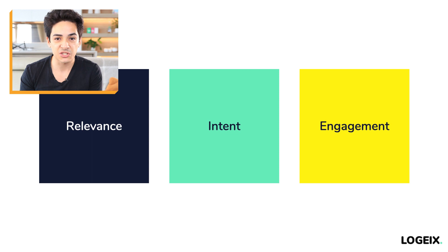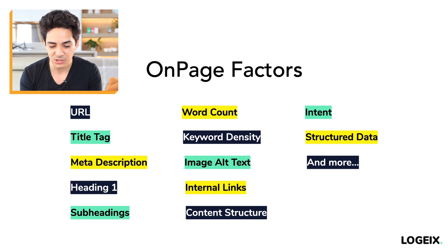So it's the combination of relevance, intent, and engagement. If we talk about the factors that influence rankings on an on-page SEO basis, it's going to be things like the URL, the title tag, the meta description, the H1, the subheadings, internal links, keyword density, and all this stuff you can see on screen — which is what we're going to break down in this module.